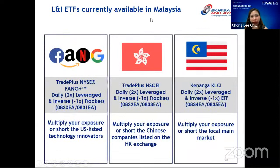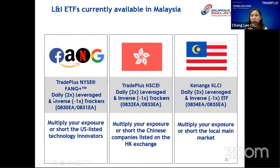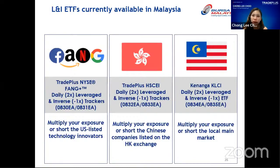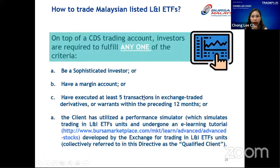The L&I ETFs currently available in Malaysia are just six products. We have the TradePlus NYSE FANG plus daily leverage and inverse tracker, and the Hang Seng China Enterprise ETF — both by Afin Huang. Kenanga also has a leverage and inverse ETF that tracks the FBM KLCI. So if you think the KLCI is going up and want to take advantage with leverage, you can potentially get that exposure through the Kenanga two times leverage ETF.